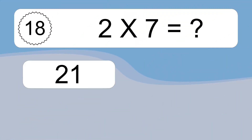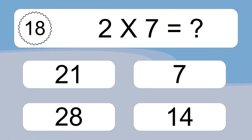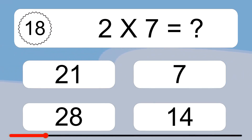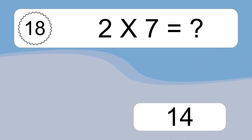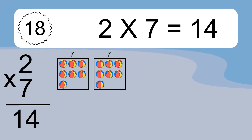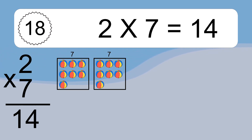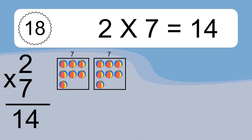2 times 7 equals what? 2 times 7 equals 14. We have 2 boxes, and each box has 7 colorful balls inside. If you count all the balls in all the boxes together, you will have 2 times 7 balls. This equals 14 balls.